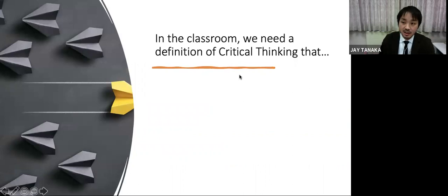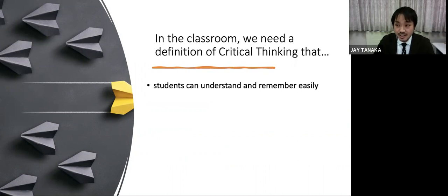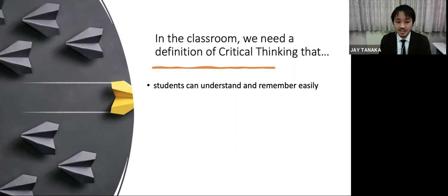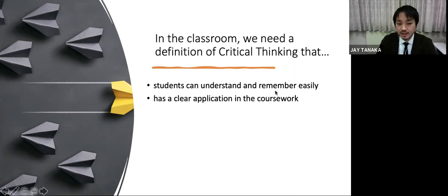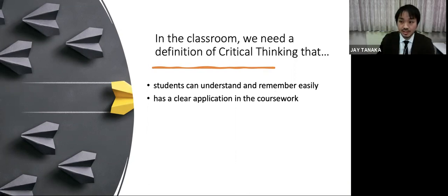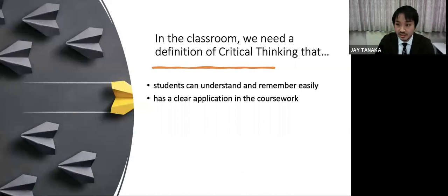Besides the context-specific definition that teachers should have, because it's a definition for the classroom, definitions for critical thinking should be easy to understand and easy to remember. There's a concept of sound bites we see in science — complex scientific theory is too big to be useful in a lot of situations, so you have to boil it down, get it simple, and package it so that students can understand and remember easily. Also, it has to have a clear application in the coursework, so students should have no problem connecting that definition to the things they're doing in class.